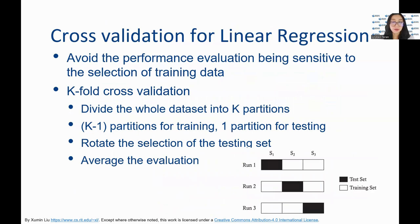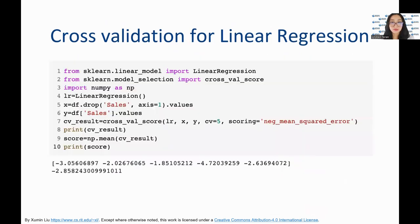Cross-validation is a standard way to test supervised learning models. It tests the model several times and rotates the selection of the testing set, and then averages the evaluation. The example here shows a five-fold cross-validation with the accuracies of the five tests printed. The average of those values is used as the overall accuracy of the model.